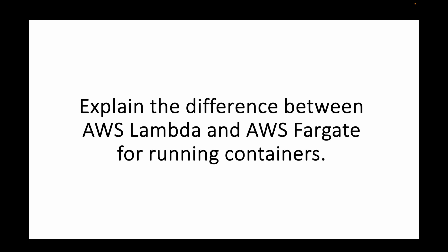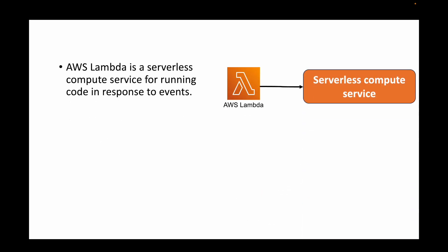The next question is: explain the difference between AWS Lambda and AWS Fargate for running containers. AWS Lambda is your serverless computing service — we don't manage any servers, we just write the code and Lambda executes it in response to events. For example, whenever an S3 bucket gets created, that event triggers a Lambda function which executes some code. So Lambda is a serverless computing service that runs code in response to events.